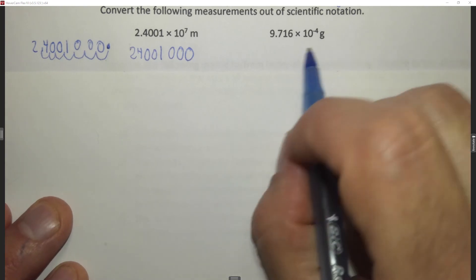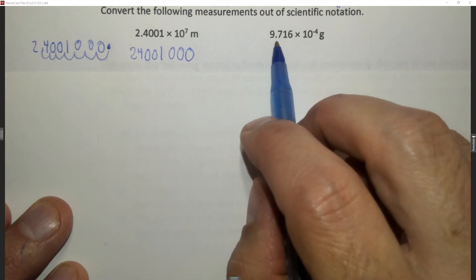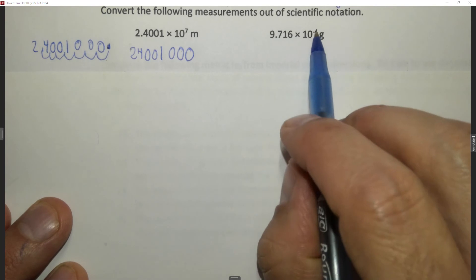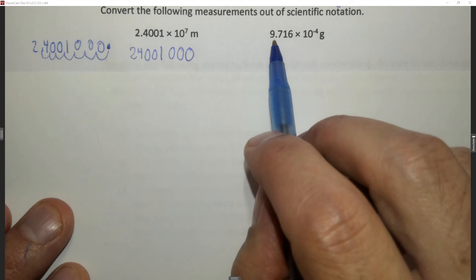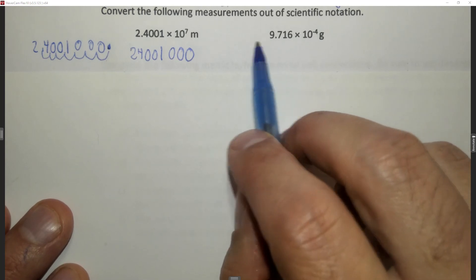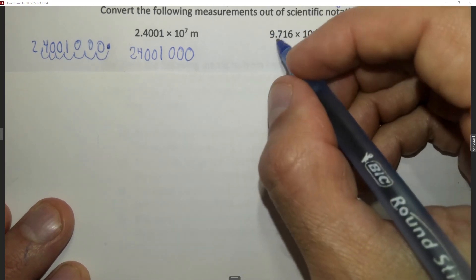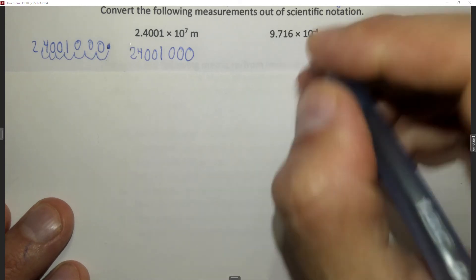All right let's do this one. We have 9.716 times 10 to the minus 4 grams. Since this is a negative exponent this number is going to be a small number smaller than 1. Said another way we want to move our decimal place in this direction. In this case we don't have to rewrite it because we're not going and running into our exponent.